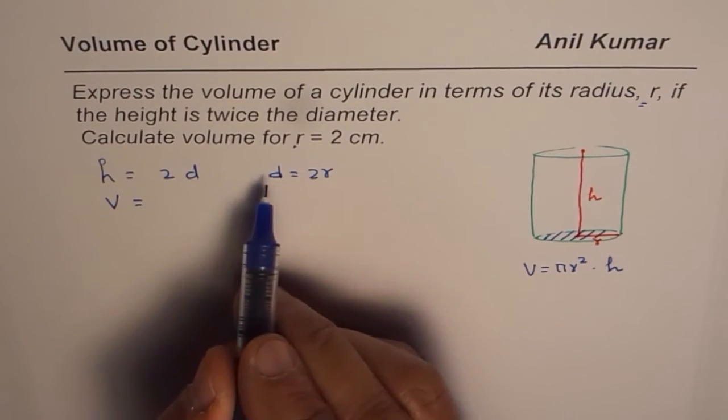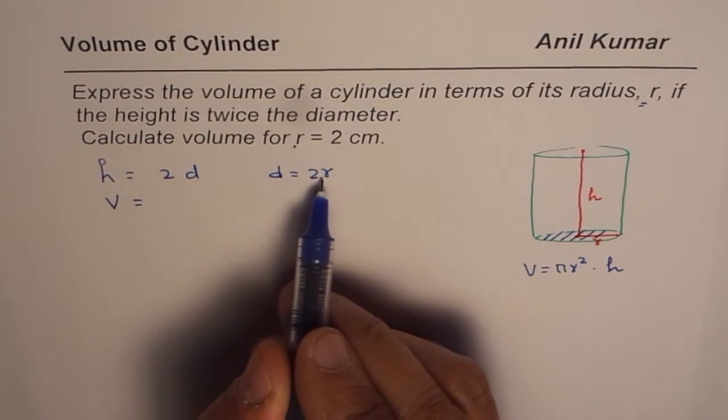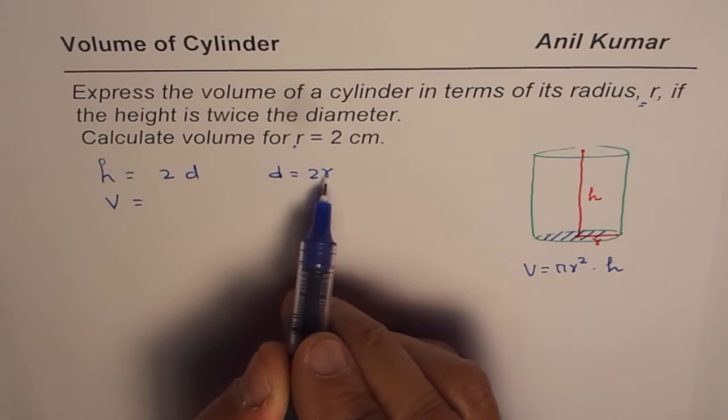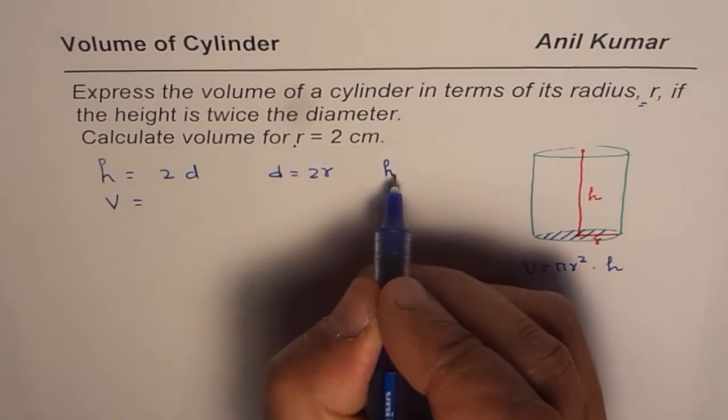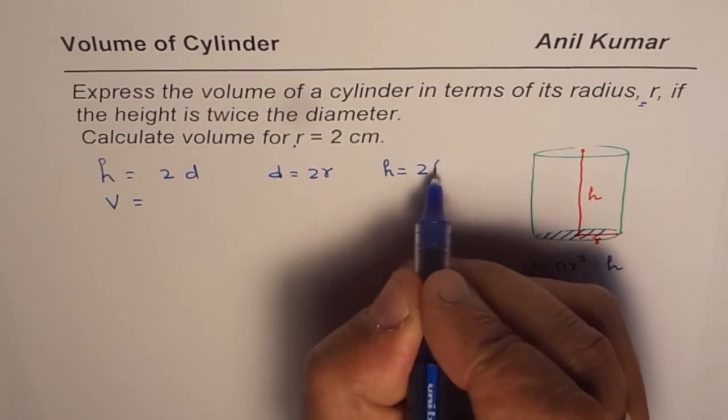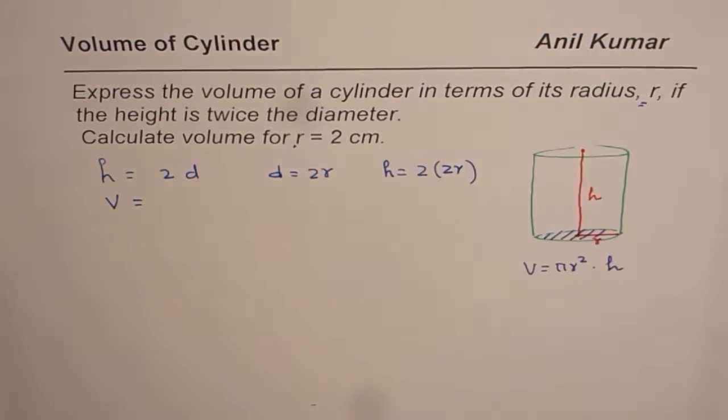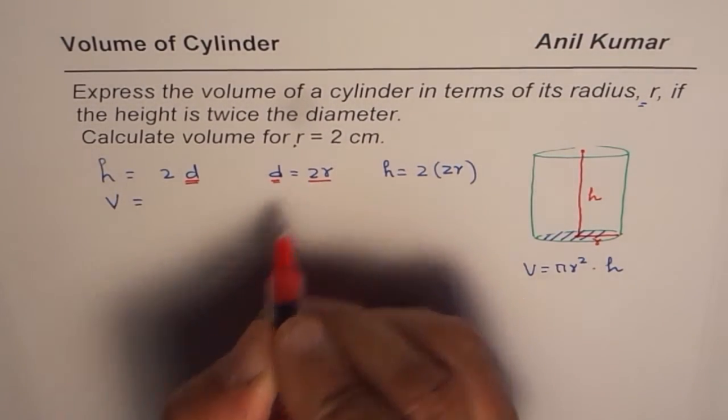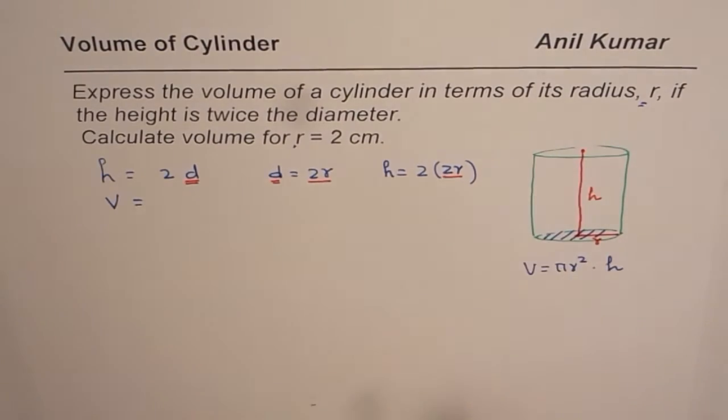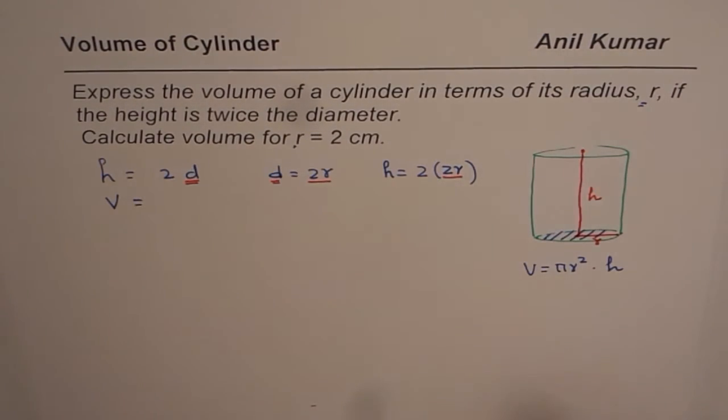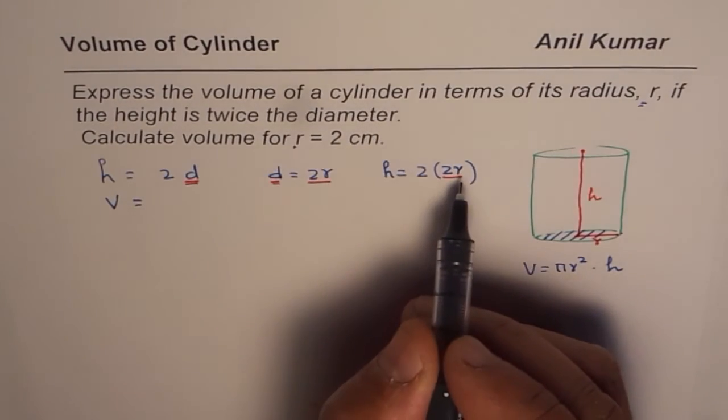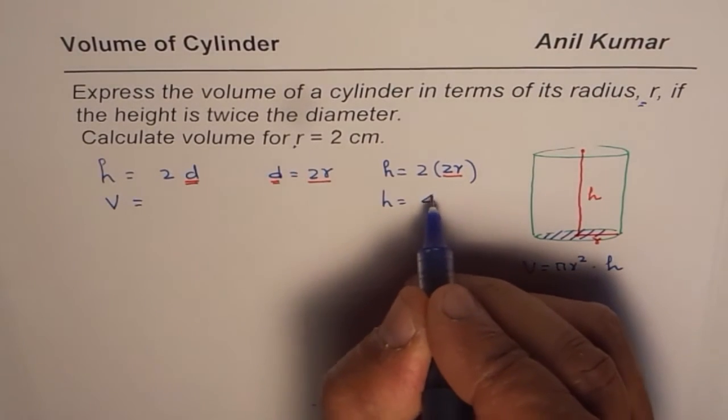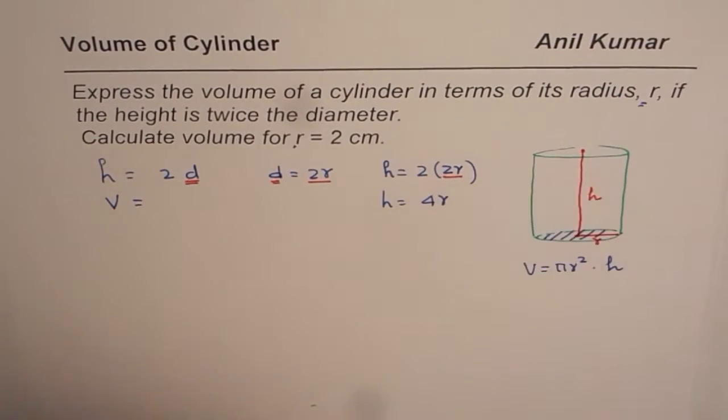So that helps to relate height with radius. So instead of d, diameter, we will write 2r, the radius. So we could write that as height equals to 2 times 2r. So what we did here was that we replaced diameter with 2r. So we got the formula for height in terms of radius. As you can see here, we could write height as equals to 4 times r from the given situation.